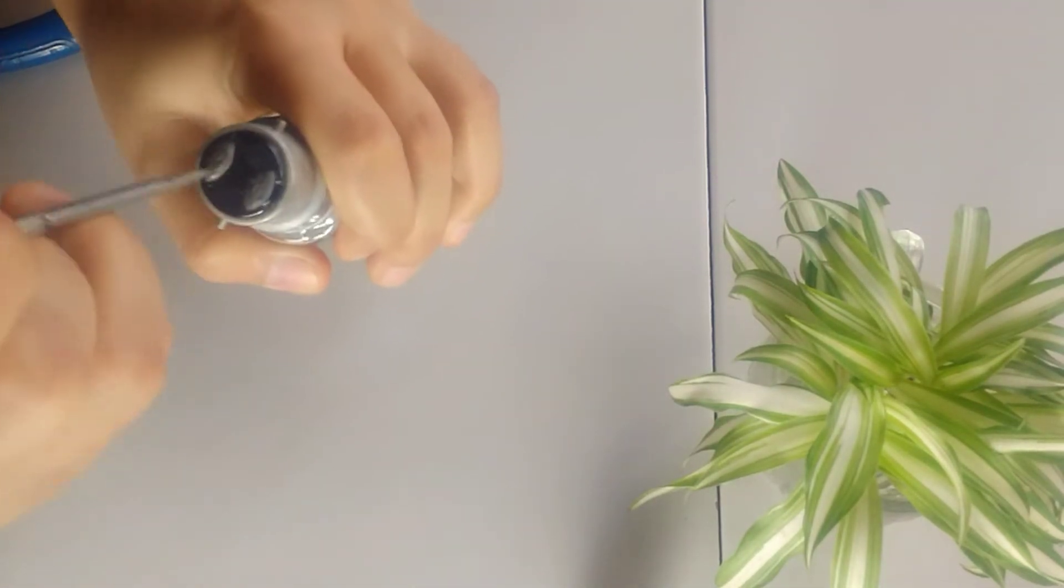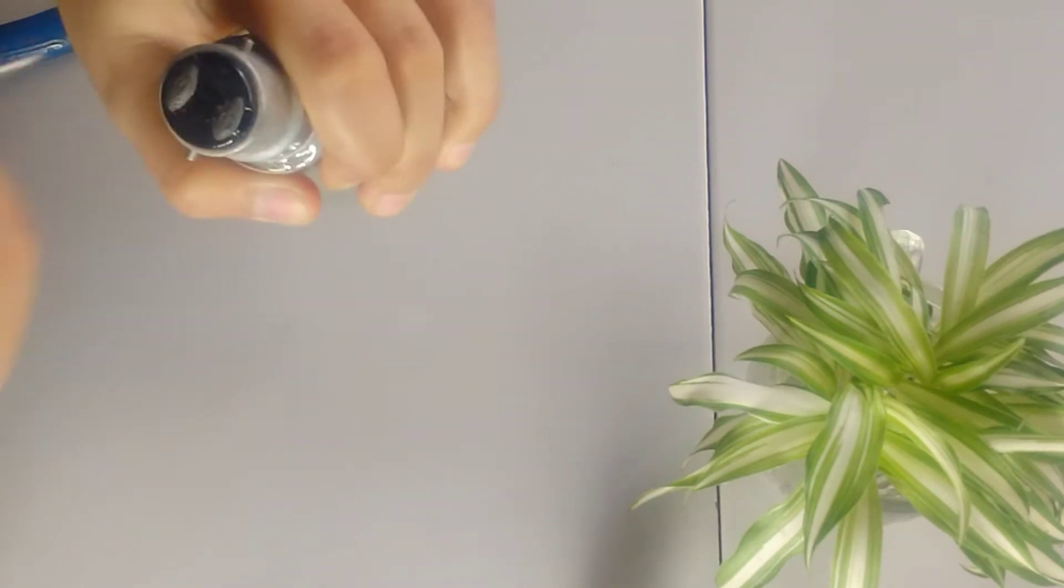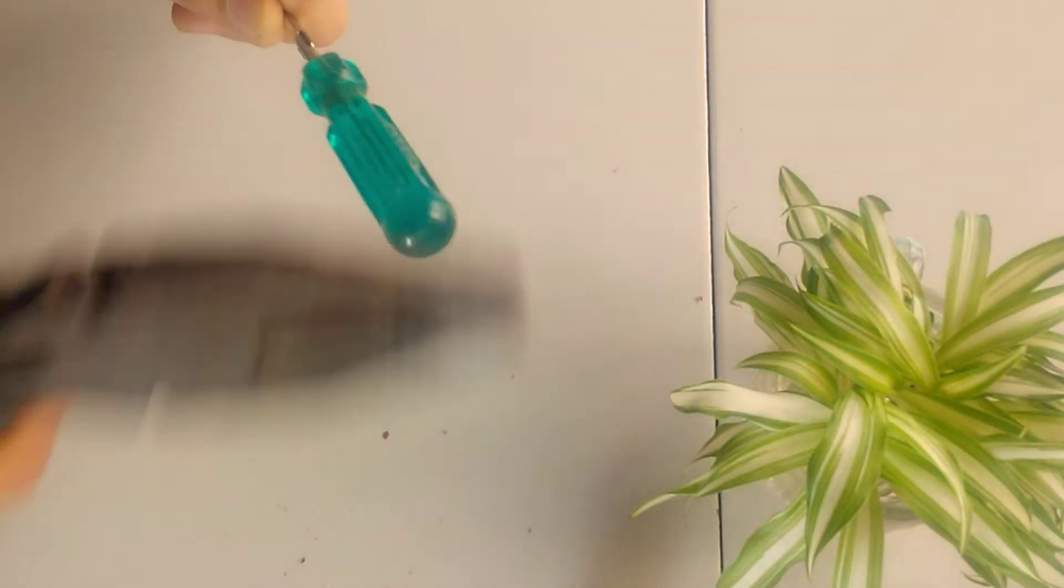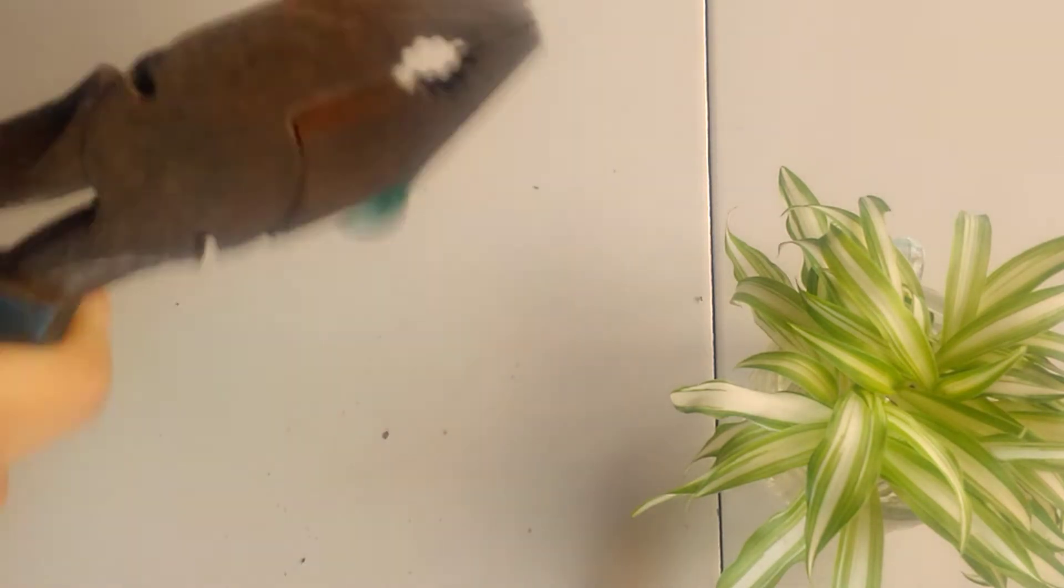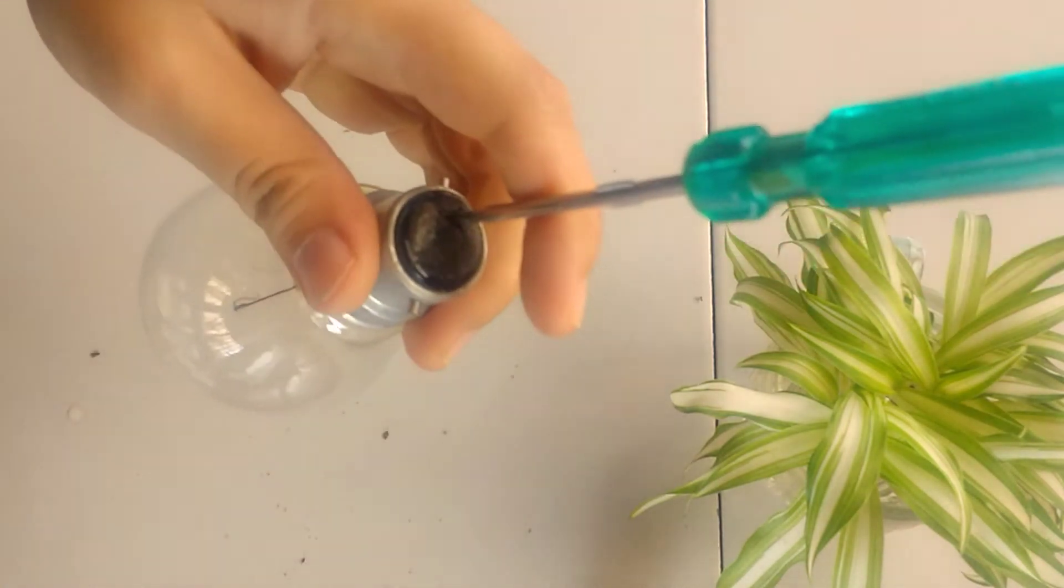Firstly, we will open the top part of the light bulb with the help of a screwdriver, or you can also use a plier. Just do it very carefully and watch your hand. See, it went inside.